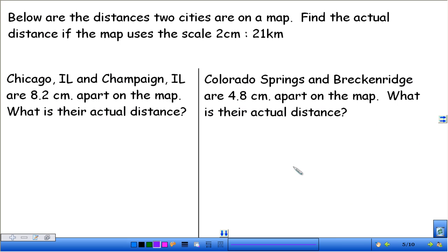So let's go ahead and do a couple together. Below are the distances two cities are on a map. Find the actual distance if the map uses the scale 2 centimeters is equal to 21 kilometers. So here's our ratio. So we're going to set that up first. So we're going to put 2 centimeters on top and 21 kilometers on the bottom. I'm just going to leave these units in here for right now just so we make sure we match them up correctly.